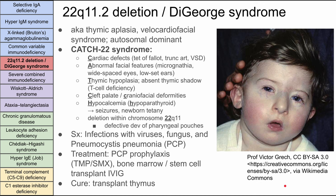This one is a little different with distinct features. This is DiGeorge syndrome, also called 22q11.2 deletion, or velocardiofacial syndrome — it's autosomal dominant. The mnemonic to help you remember the features is CATCH-22. The C stands for cardiac defects — often tetralogy of Fallot, truncus arteriosus, or VSD. The A stands for abnormal facial features: micrognathia, wide-spaced eyes, and low-set ears. T stands for thymic aplasia — you'll notice an absent thymic shadow on X-ray, which corresponds to the T cell deficiency.